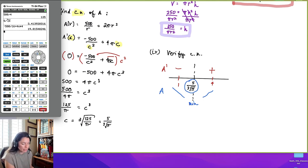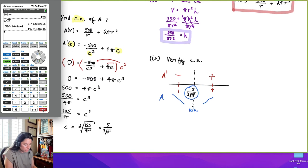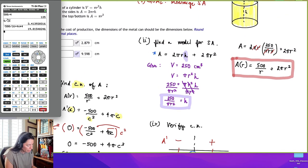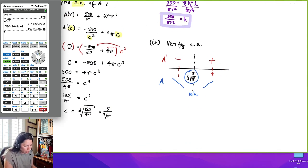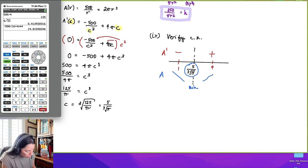All right. And I think we're pretty much done after we get the critical numbers and verify. So we know now that r is equal to 5 over cube root π, and that will make the cylinder a minimum.